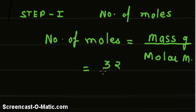So 32 is the mass of methanol and its molar mass is also 32, so the number of moles of methanol equals one.